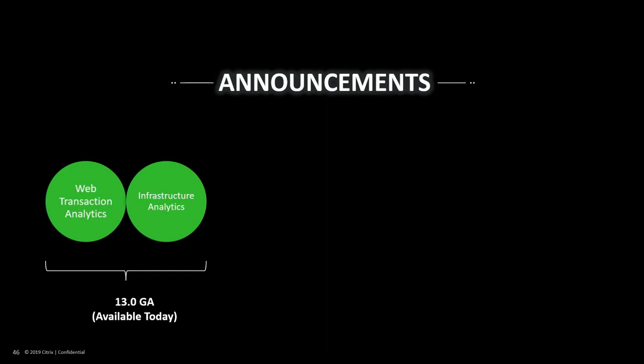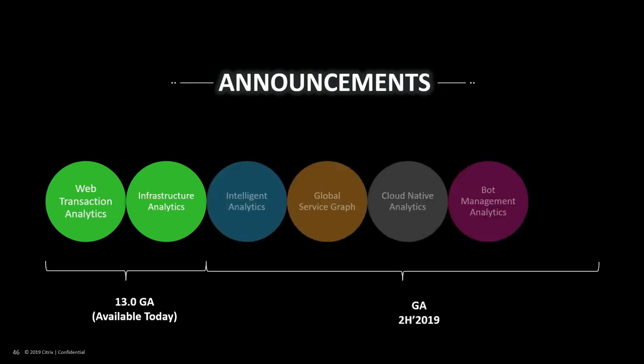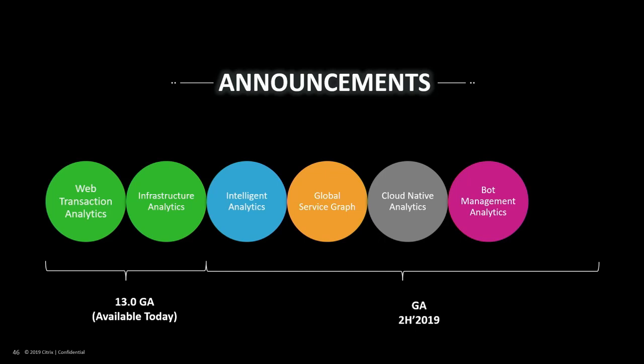Now a couple of key announcements. Web Transaction Analytics and Infra Analytics are already out and available today — those are the first two features we talked about. The remaining features — Intelligent Analytics, Global Service Graph, Cloud-Native Analytics, and Bot Management Analytics — are going to be available in the second half of this year. The freemium tier for ADM service is also going to be available in the second half.